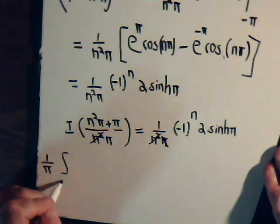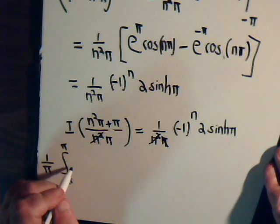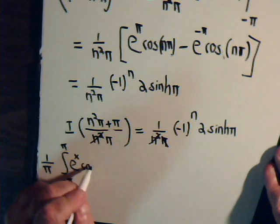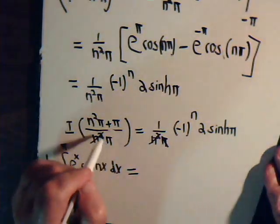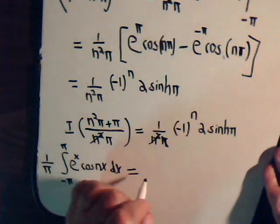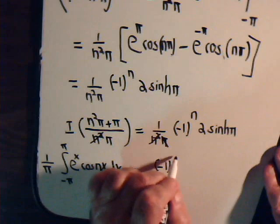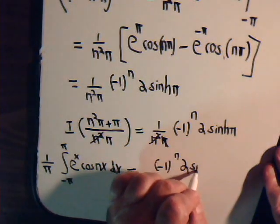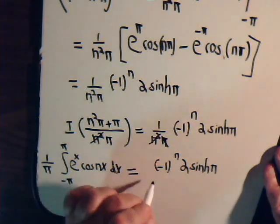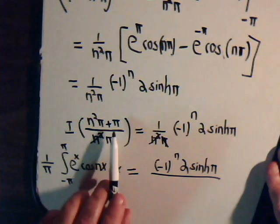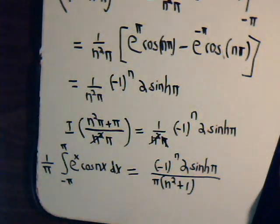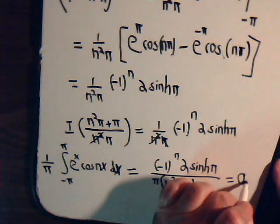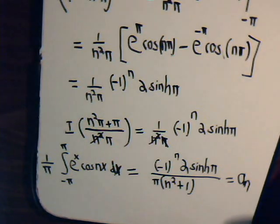So let's write it out: one over pi times the integral from minus pi to pi of e to the x cosine nx dx equals, dividing both sides through, minus one to the n times two times the hyperbolic sine of pi, divided by pi times n squared plus one. And that is our a sub n term. So there we have it finally.